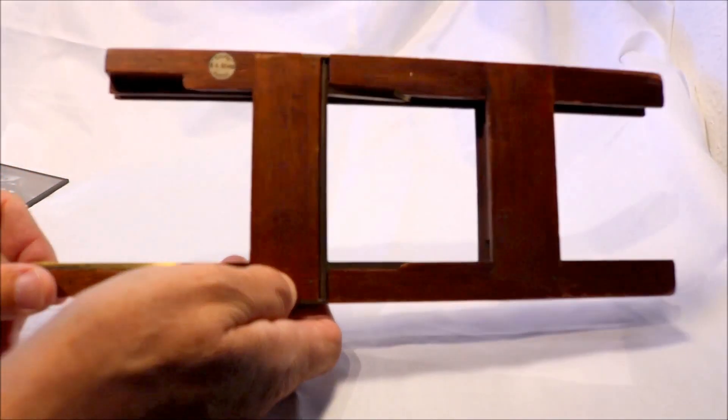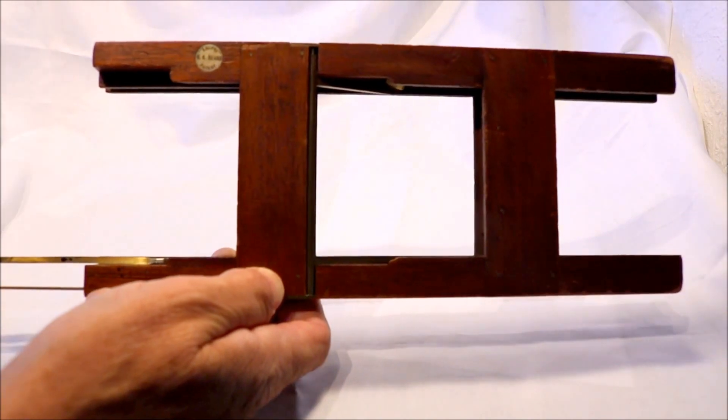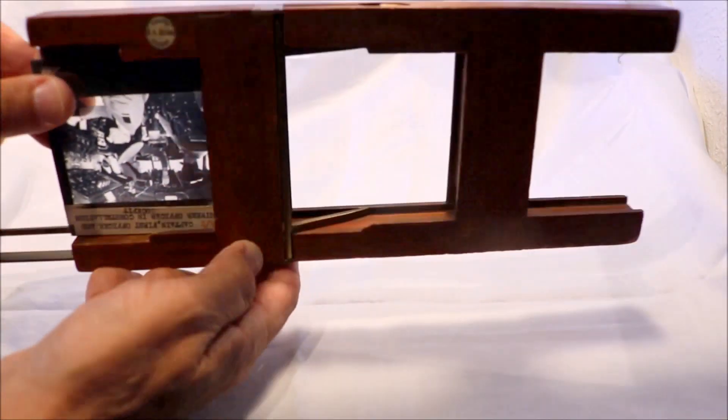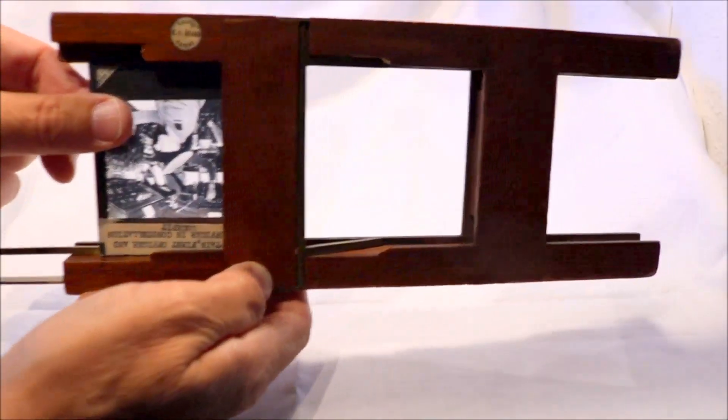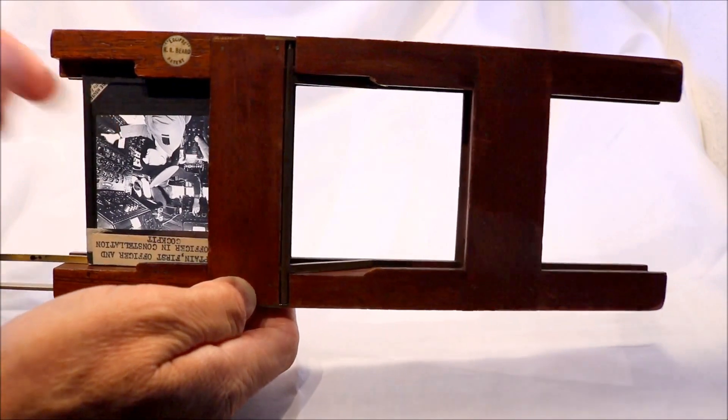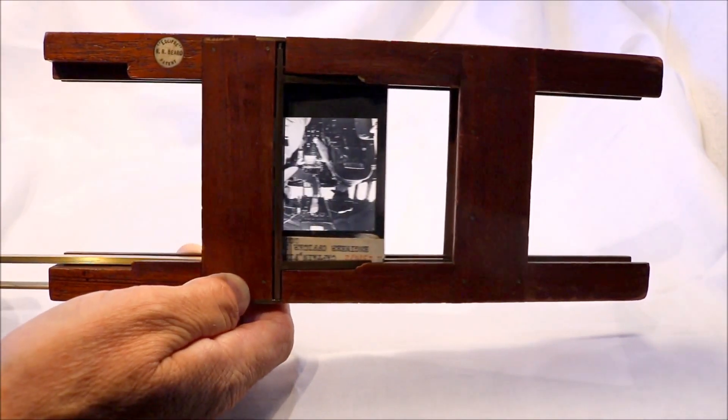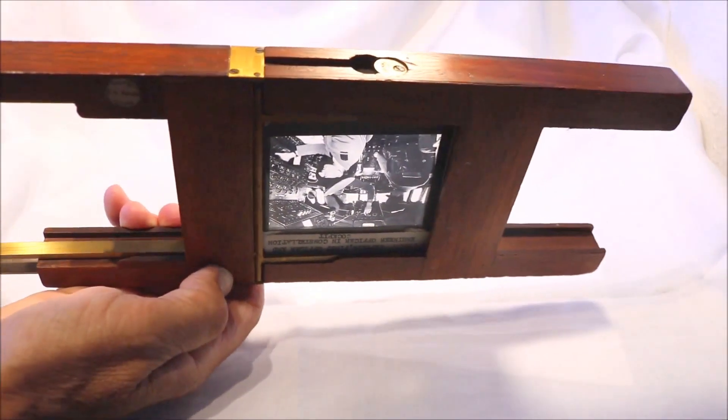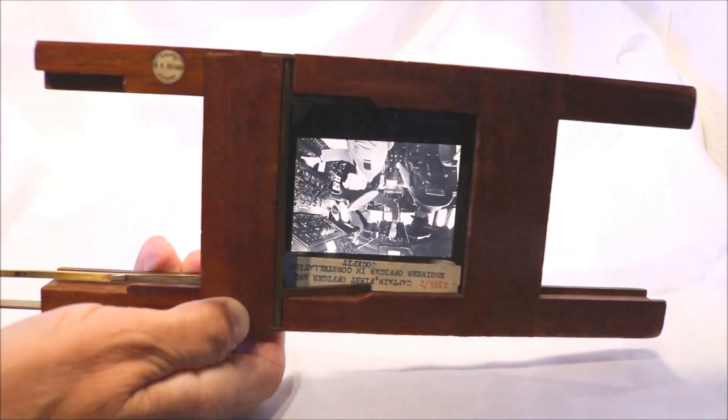So let's start by putting a slide into the slide carrier. You pull out the handle and you put the slide upside down and back to front. It's a standard British three and a quarter inches square slide in the front slot. You then push the handle to the right and it pushes the slide into position. It can now be seen on screen.